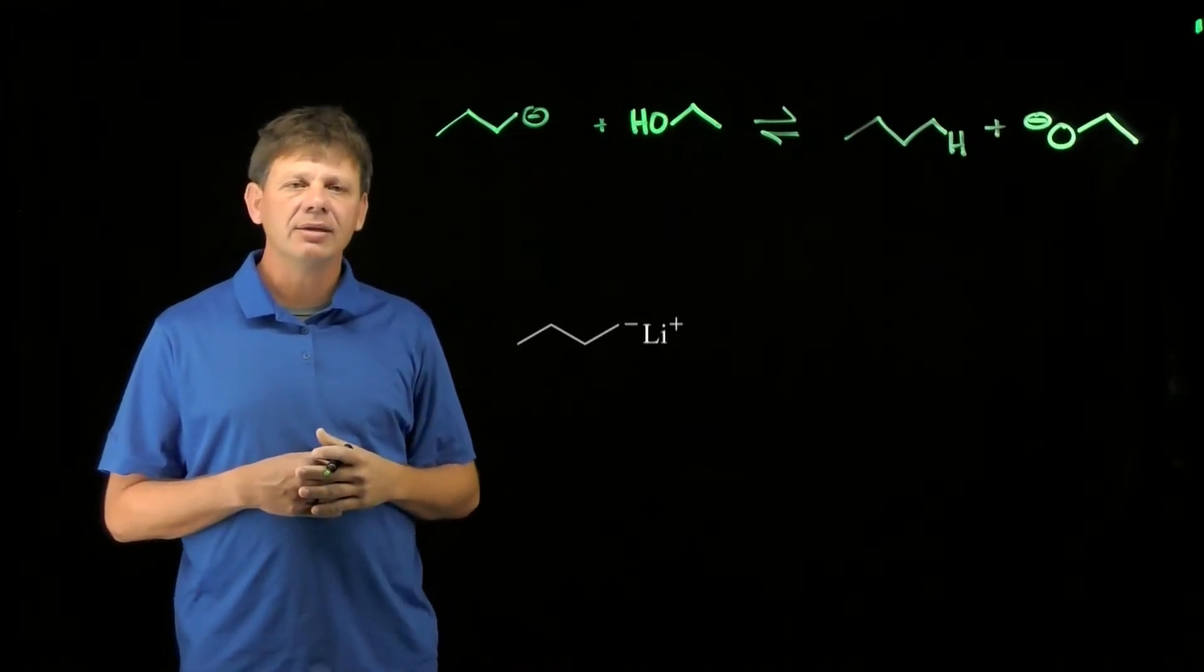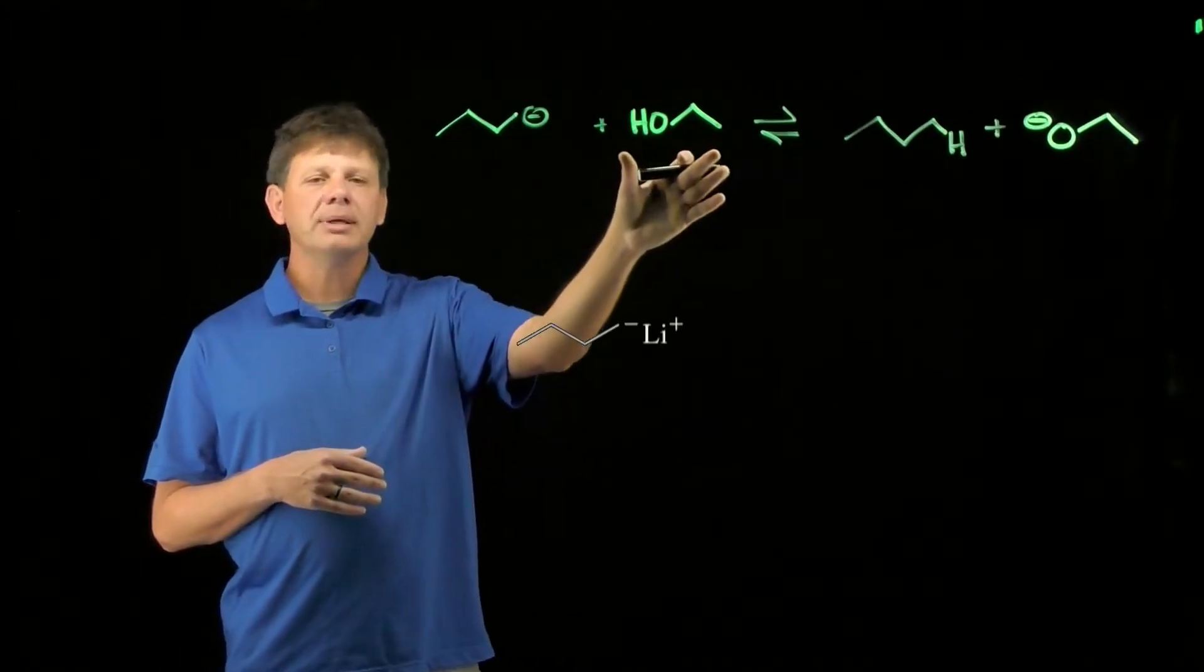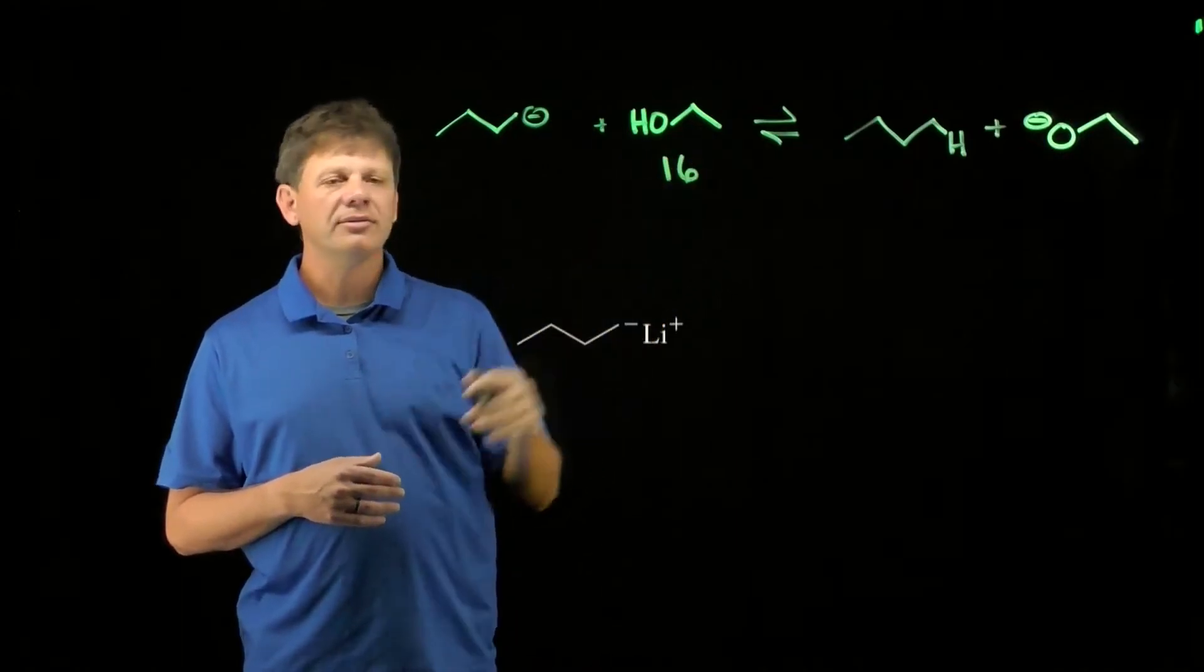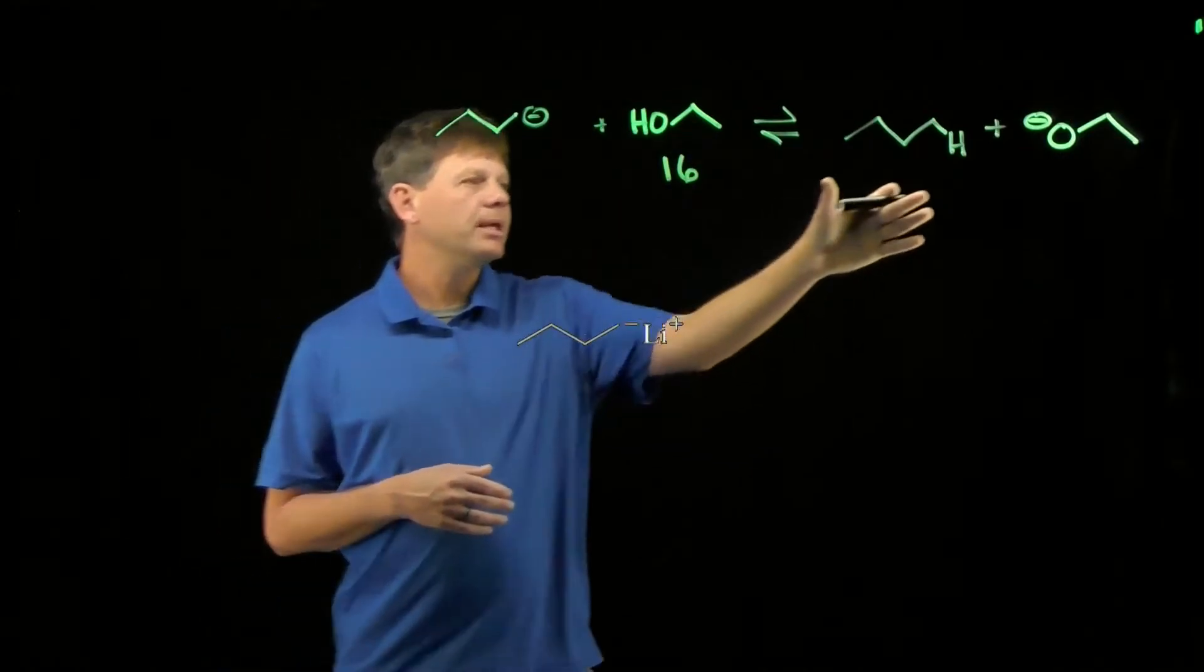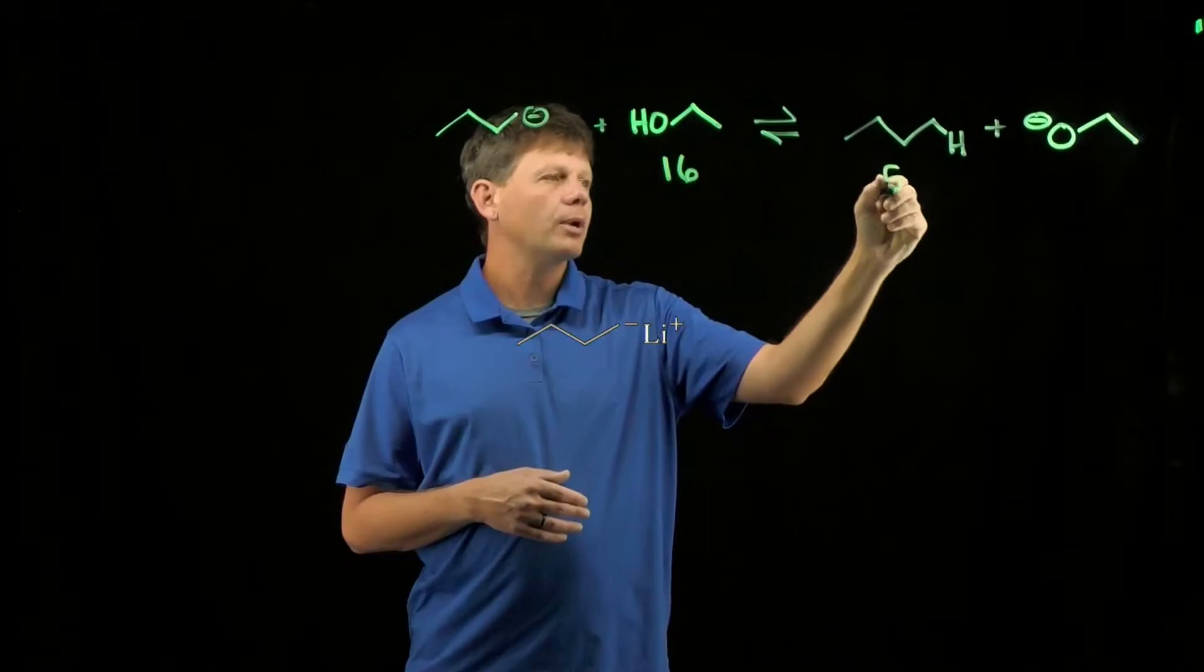And we can calculate Keq for this reaction using the pKa values. The pKa of ethanol is around 16. The pKa of butane is around 50.